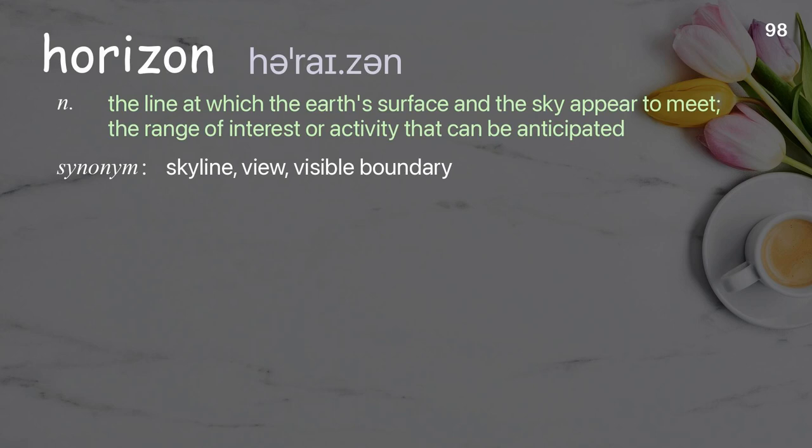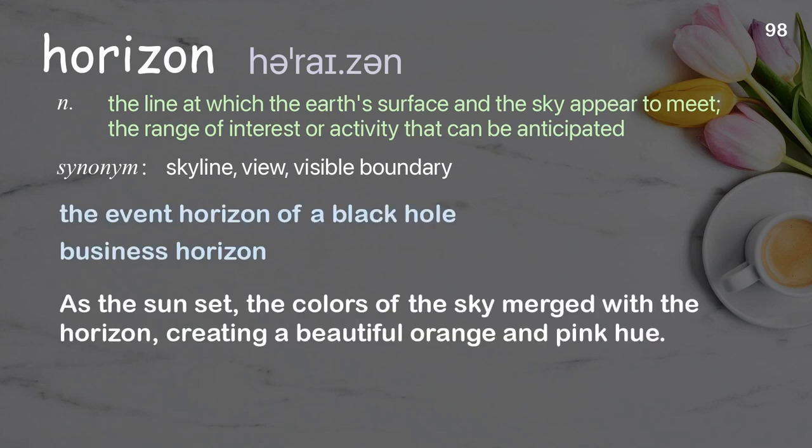Horizon: The line at which the earth's surface and the sky appear to meet; the range of interest or activity that can be anticipated. Examples: the event horizon of a black hole, business horizon. As the sun set, the colors of the sky merged with the horizon, creating a beautiful orange and pink hue.